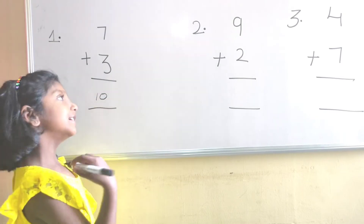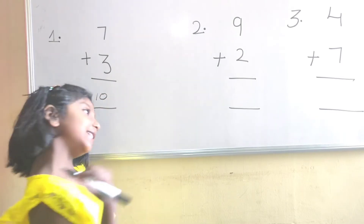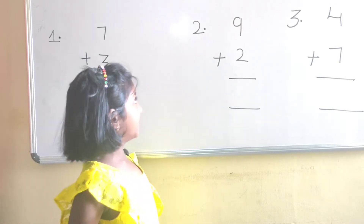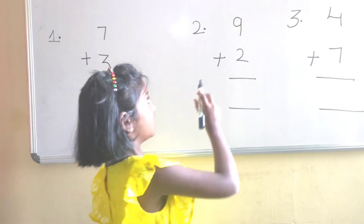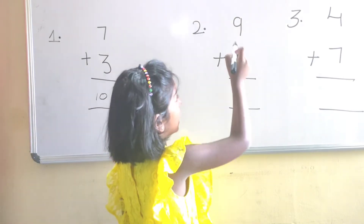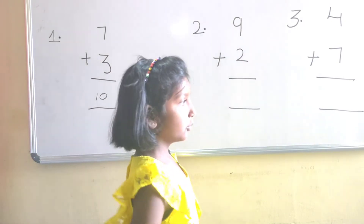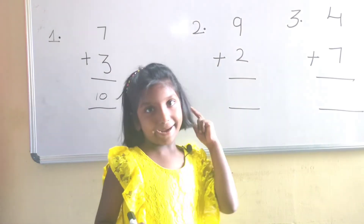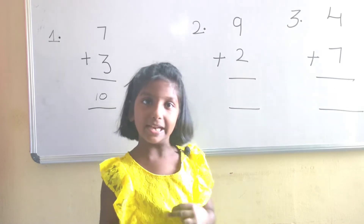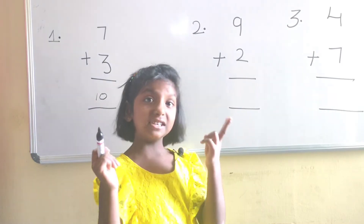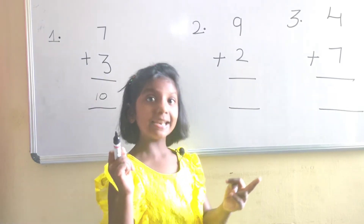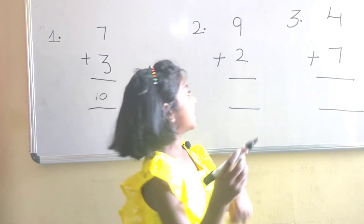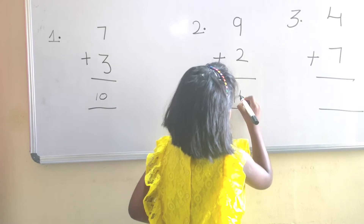Now, let us go to the next problem. 9 and 2. 9 in mind, 2 in hand, after 10, 11. The answer is 11.